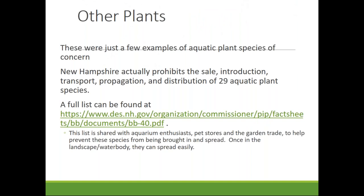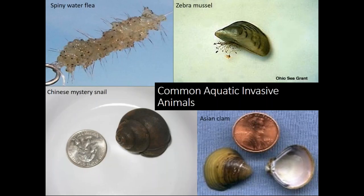I've highlighted the really common plants to be aware of, but there are 29 species listed as prohibited in New Hampshire, plus the Hattonia plant I mentioned. You are welcome to look at the full list via the provided link to get familiar with all 29 species of concern.